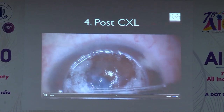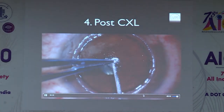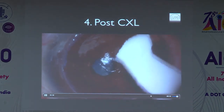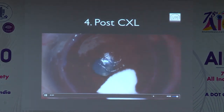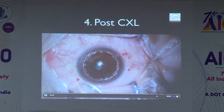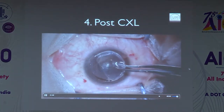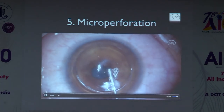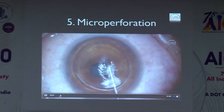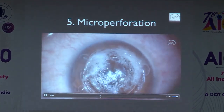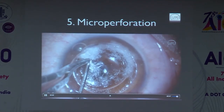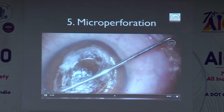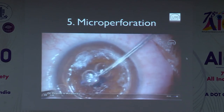If you have exposed Descemet's membrane during dissection, you can decide not to remove it and complete the surgery. In cases with micro-perforation, you can often salvage the DALK without converting to PK — use manual dissection technique instead of the big bubble when there is a micro-perforation early in the dissection.